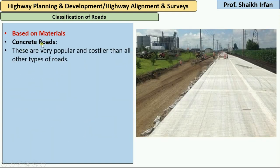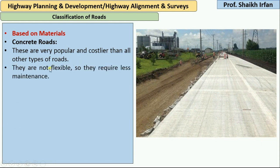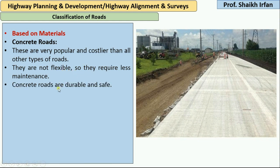The next type is concrete road. These are very popular but costlier than all other types of roads. Unlike bituminous road, which is a flexible road, concrete road is known as rigid pavement — we will see this concept in detail in next videos. Concrete roads are not flexible; they are termed as rigid pavement and they require less maintenance.